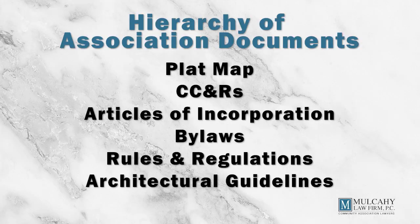The hierarchy is simple. The plat map is at the top, CC&Rs are second, articles of incorporation are third, bylaws are fourth, rules and regulations are fifth, and architectural guidelines come after that. So: plat, CC&Rs, articles of incorporation, bylaws, rules, and architectural guidelines. In the event of a conflict — say the bylaws say the board shall consist of nine members but the CC&Rs say three — the CC&Rs control because they are higher in the hierarchy.